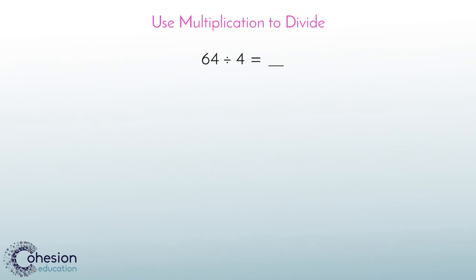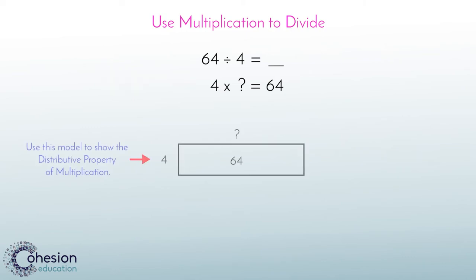To begin to understand how to use multiplication to solve a division problem, let's start off with a model of the distributive property. Looking at the problem we have, 64 divided by 4, we will need to use the multiplication sentence, 4 times what will give us 64. We will quickly sketch a model to help us better understand the distributive property of multiplication to solve this division problem.